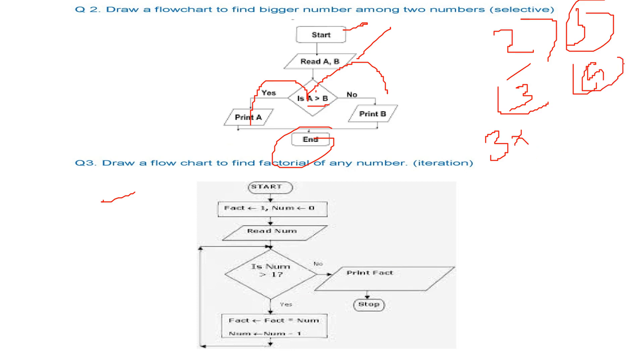Then just deduct 1, that is subtract 1, that is 2. Then again subtract 1, that is 1. And then we stop here. And 3 into 2 into 1 is the factorial. For that we start, we assign fact as a variable and num equal to 0. Then we read the number that is 3.